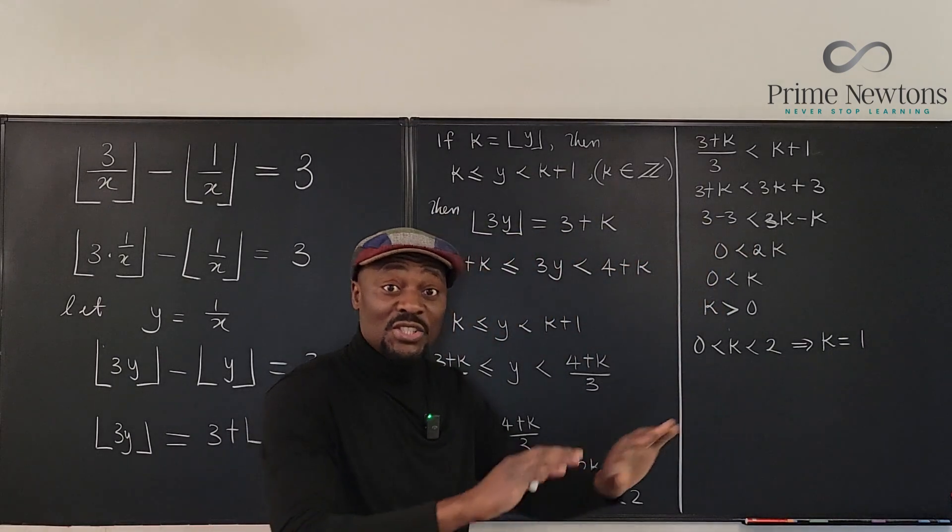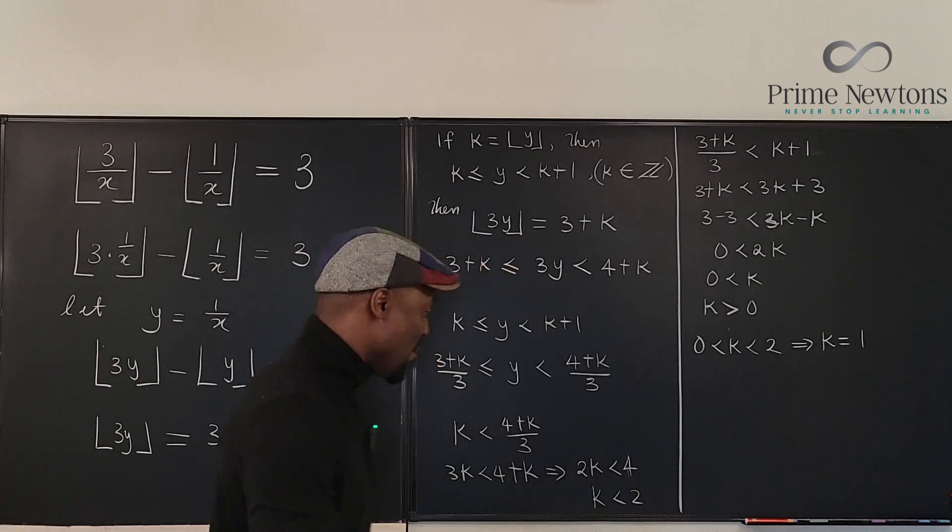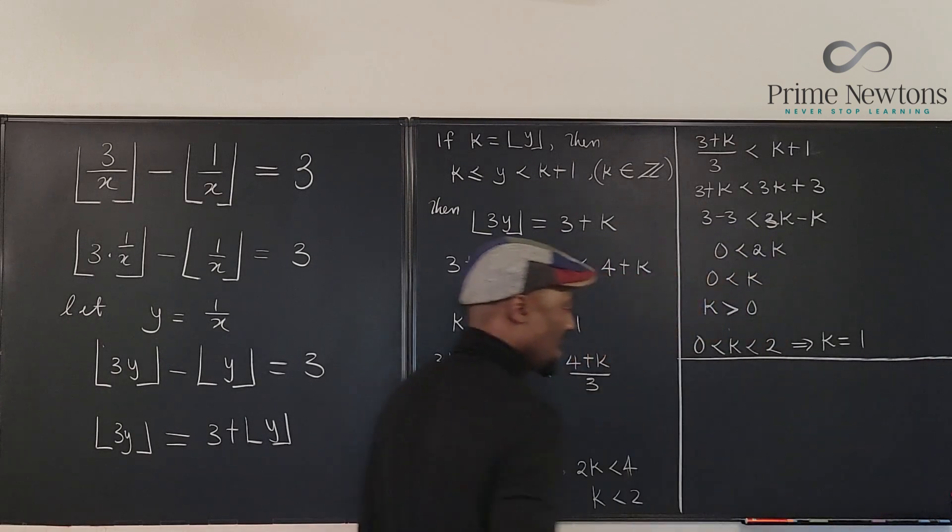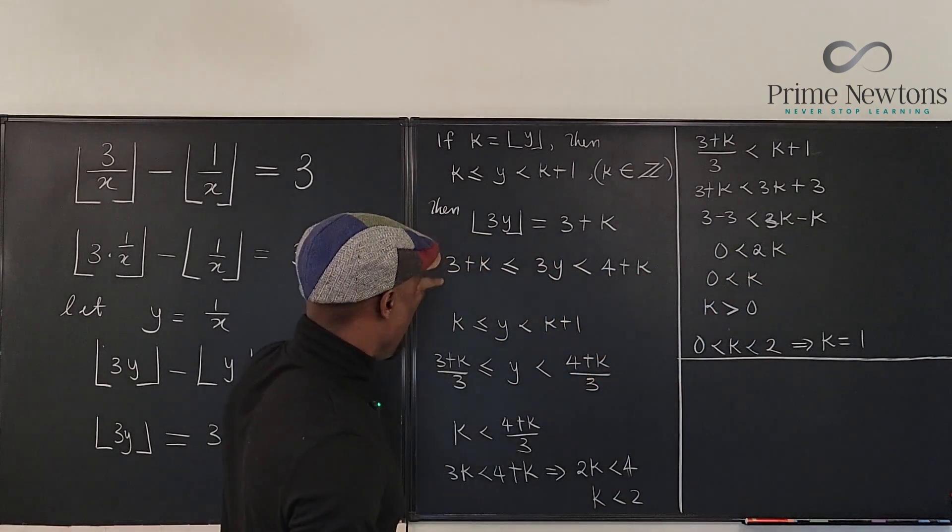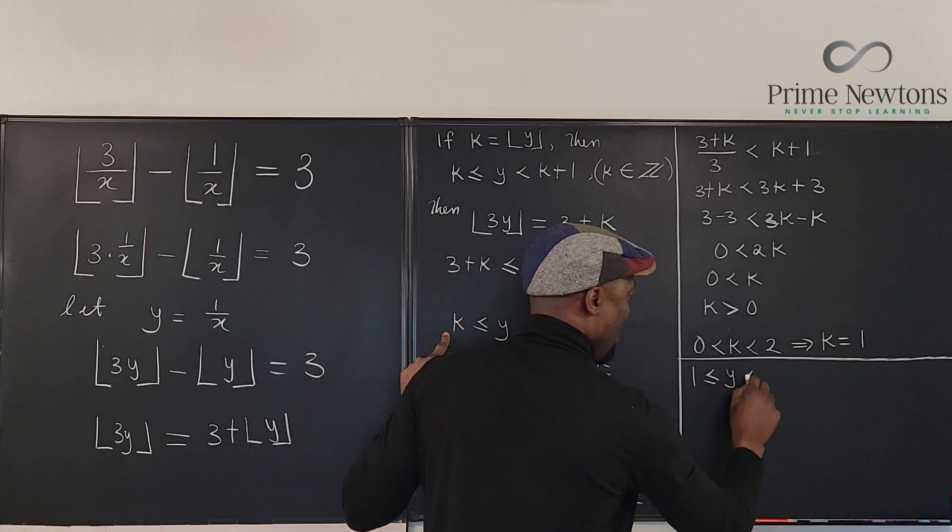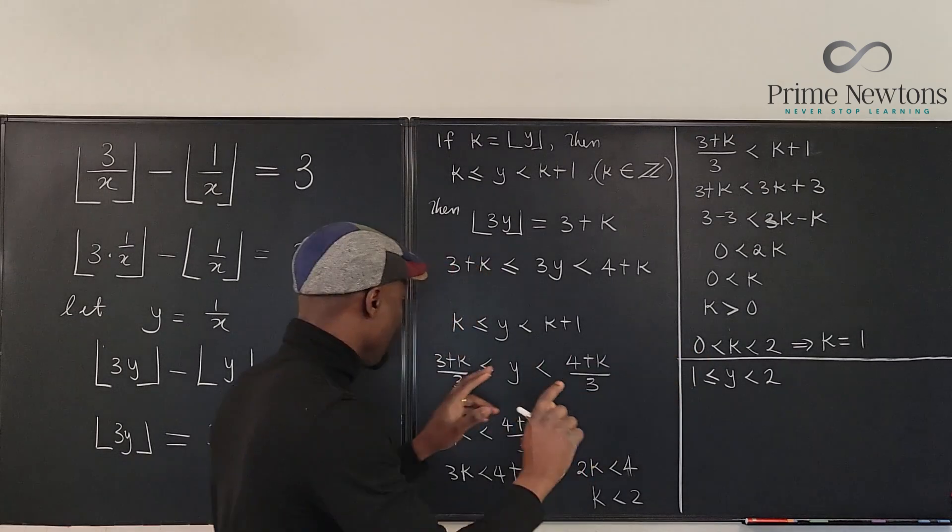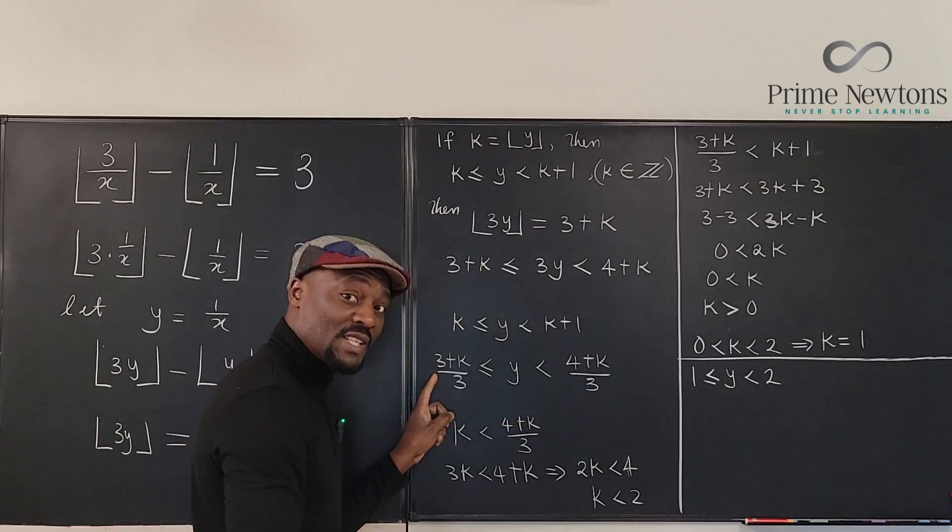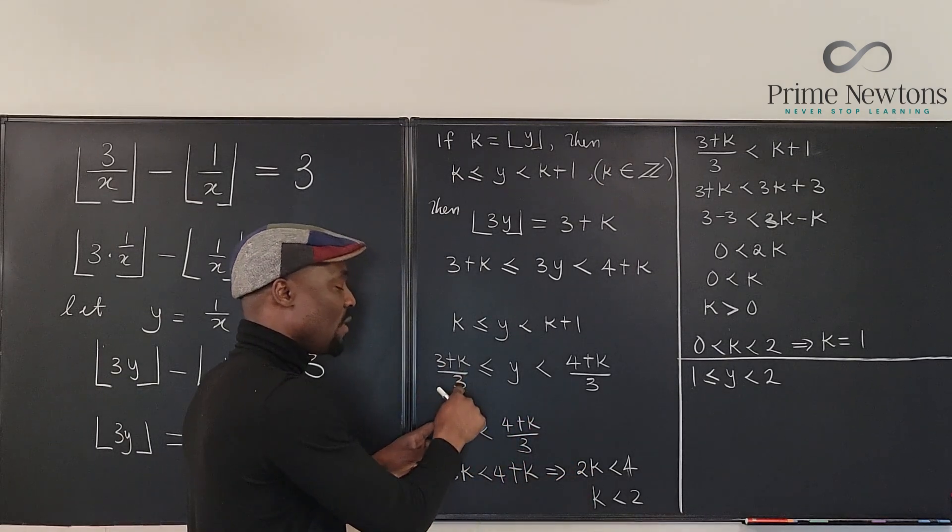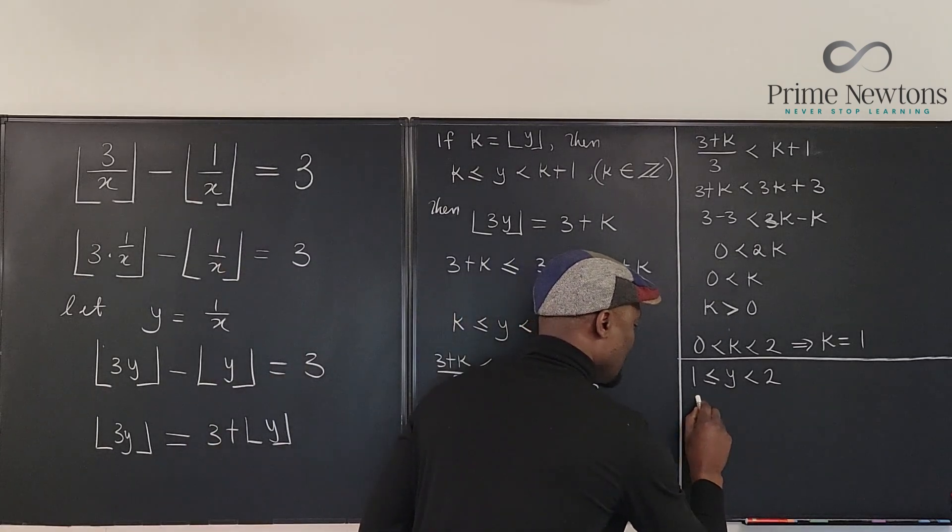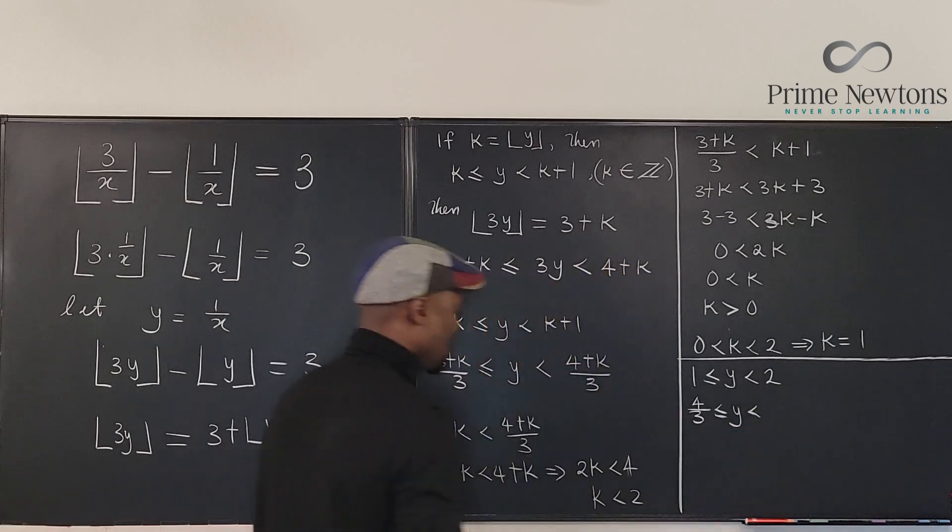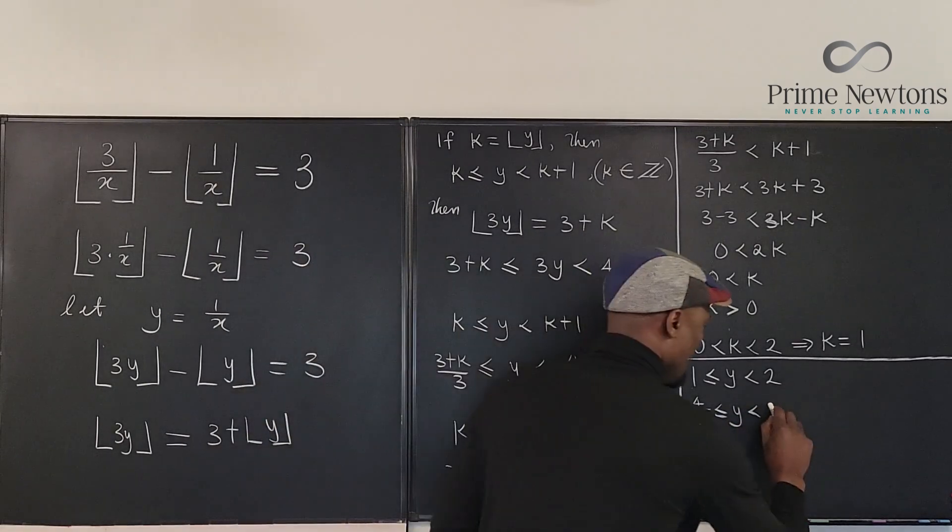And with this we can just get our answer because we can go back here and plug in k. So since k equals 1, from this equation we know that 1 is less than or equal to y. Now we have the first one, and then we're going to plug in the second one. We're going to plug in 1 into the second equation so we have a more restricted interval. So if we plug in 1 here, it's going to be 3 plus 1 over 3, that's 4 thirds. So we have 4 thirds is less than or equal to y, and it's less than, if we plug in 1 here, it's going to be 5 thirds.